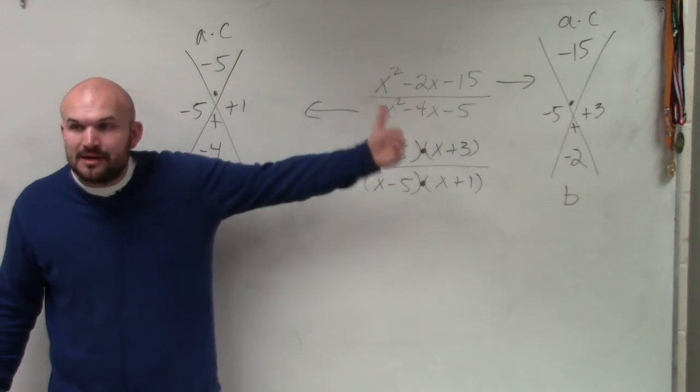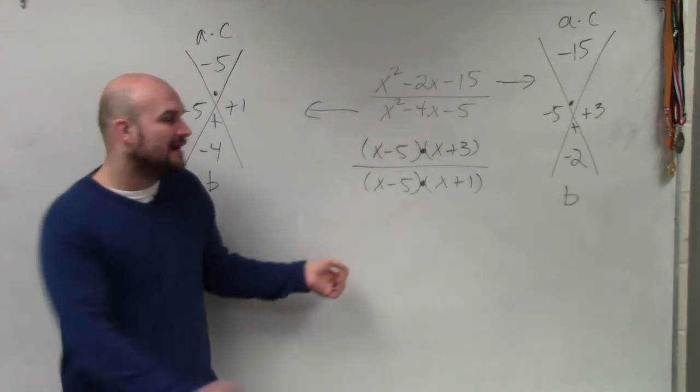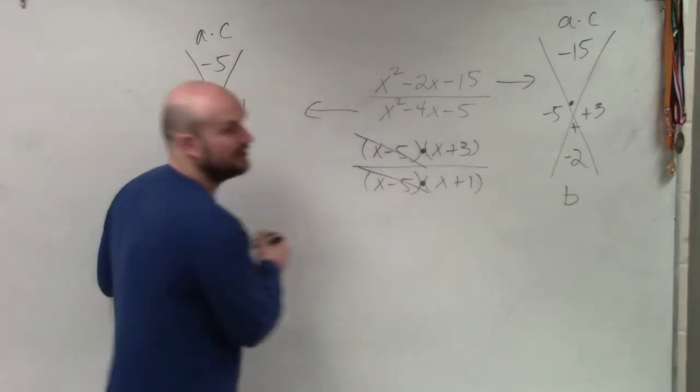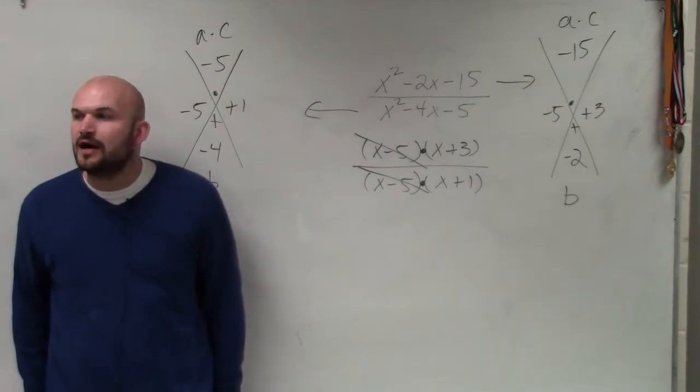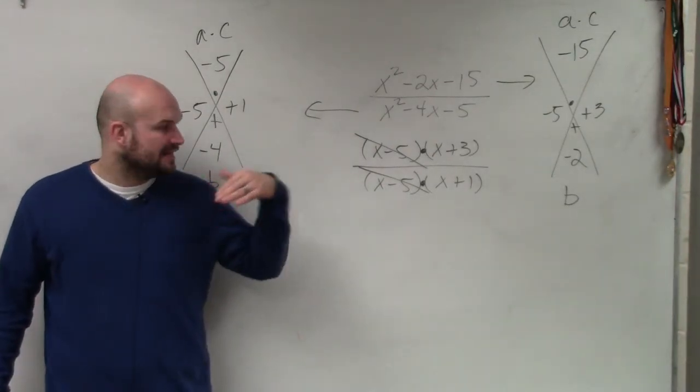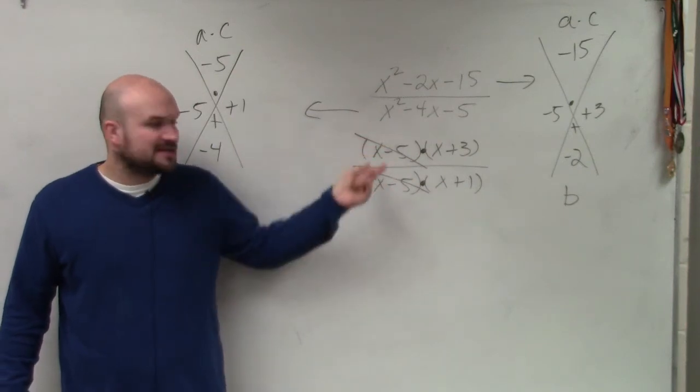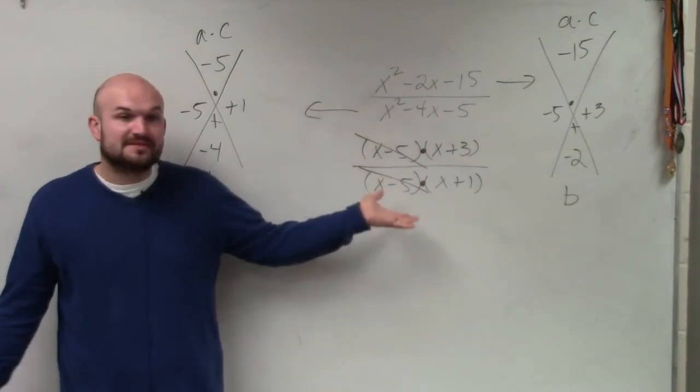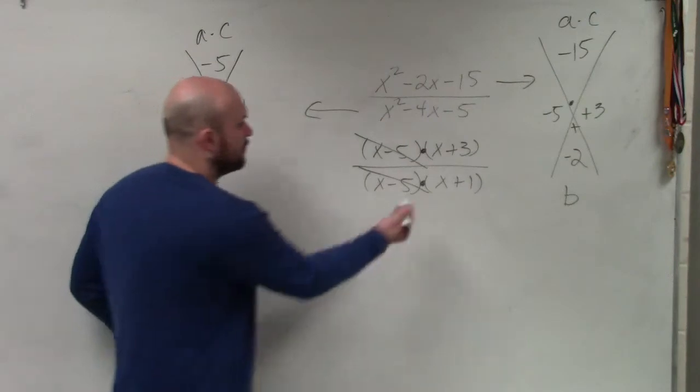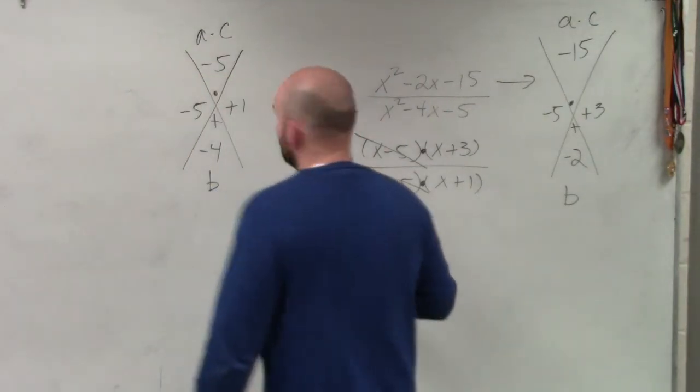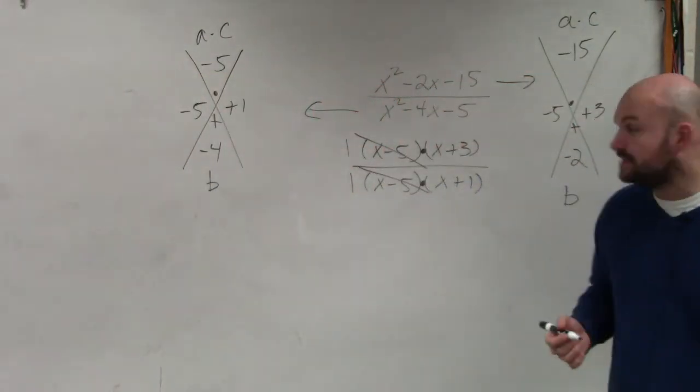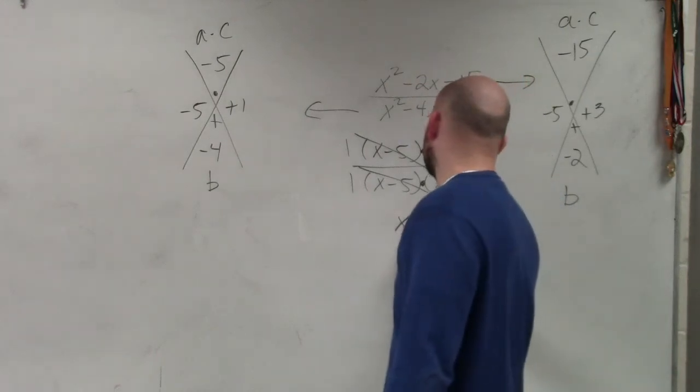So since they're separated by multiplication, I can apply the division property. And I can divide from the numerator and the denominator. So since x minus 5 over x minus 5 is the same, that divides to 1 over 1. Please make sure you remember those divide to 1 over 1. So I'm just left with x plus 3 divided by x plus 1.